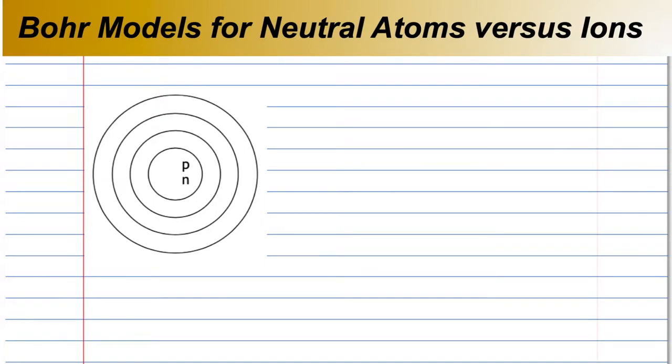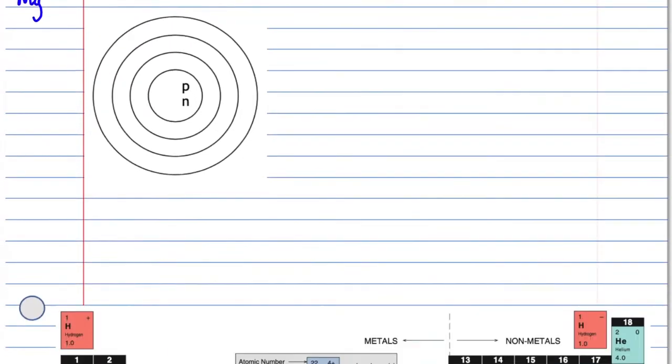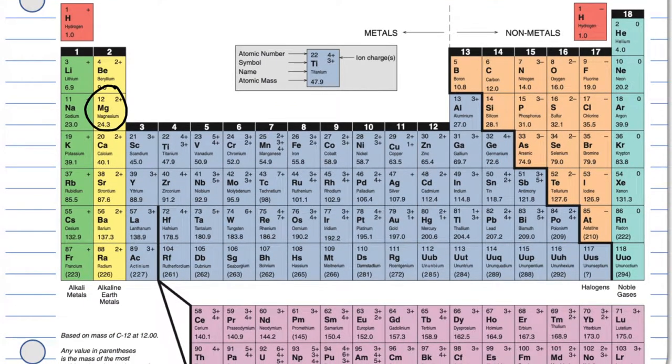Bohr models are useful for looking at the arrangement of electrons in an atom. Let's look at an example. Magnesium, capital M, little g, is on the periodic table as a neutral element.